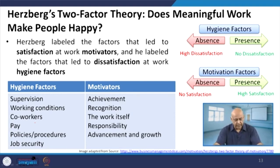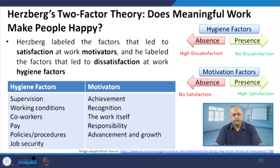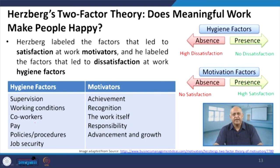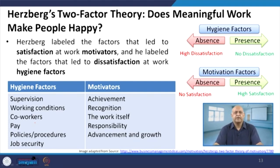Motivators are achievement, recognition, the work itself, responsibility, advancement, and growth. You can compare this theory with Maslow's theory — hygiene factors are basically concerned with physiological needs, safety needs, and some part of self-esteem needs. Some part of self-esteem and self-actualization needs become the motivator factors. What the leader has to do is continuously evaluate strategies, policies, and motivational practices — whether they are giving and challenging or not. The follower needs continuously challenging tasks.